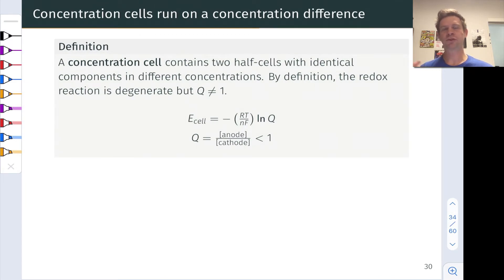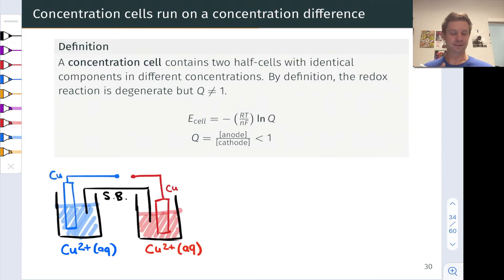In a concentration cell, we have two half cells with equivalent components chemically. For example, copper metal and copper 2+ are both present in both half cells. This means that the redox reaction that takes place is degenerate—the products are identical to the reactants. The practical setup would look something like this, with copper metal and copper 2+ aqueous on the left-hand side, and copper metal and aqueous copper 2+ on the right-hand side, completely degenerate.